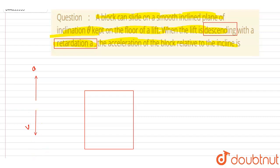Now it is said that there is an inclined plane inside it and a block is kept on this inclined plane. So we want the acceleration of the block relative to the inclined plane. Let's say the mass is m.